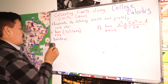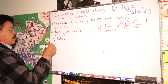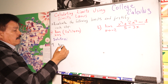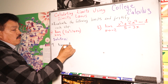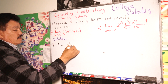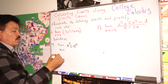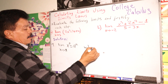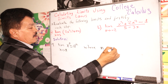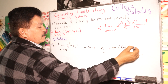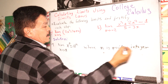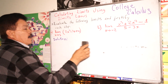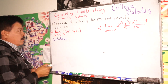Limit law number nine states: the limit of x to the n-th power equals a to the n-th power, as x approaches a. This applies where n is a positive integer. We need to know this kind of limit law.